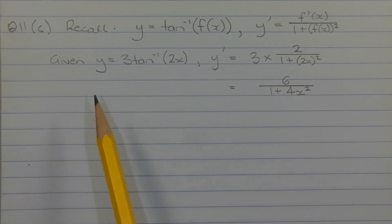Now, in this case, y is equal to 3 times inverse tan of 2x, so our f of x is 2x. And f dash of x in this case is 2.